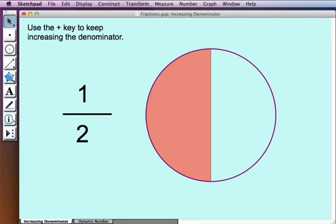Here we see one of the fraction models. Our fraction starts at one-half. We'll use the plus key on our keyboard to increase the denominator from 2 to 3 to 4 and upwards, all the way to 100.